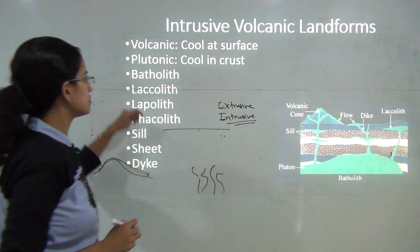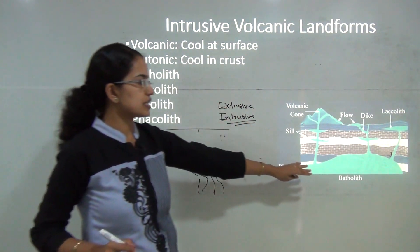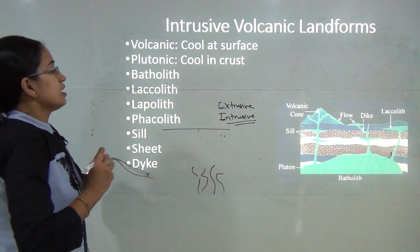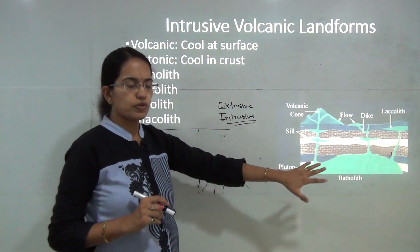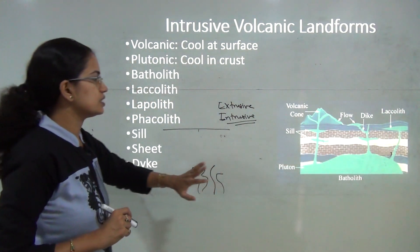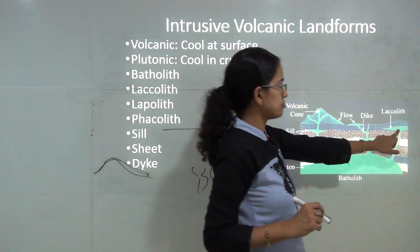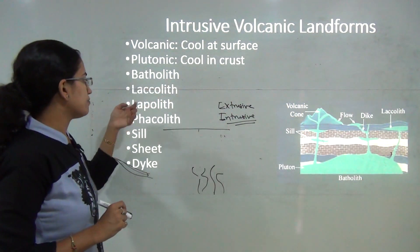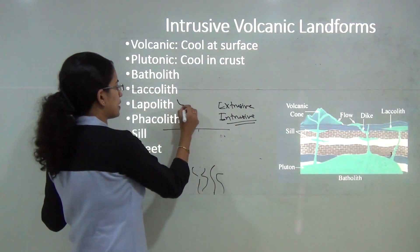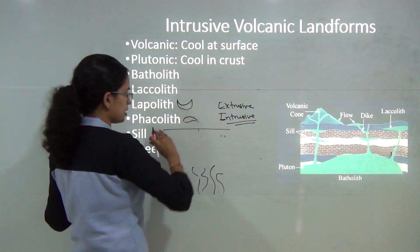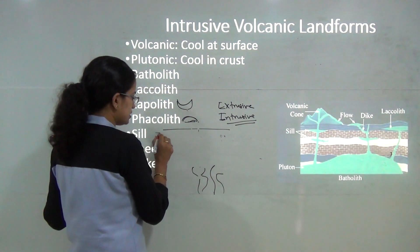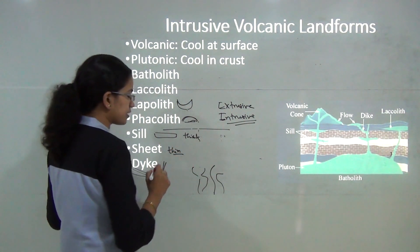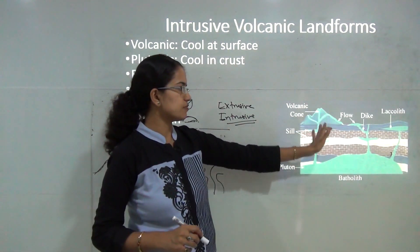Intrusive landforms can be further classified into various types. Plutonic deposits cool in the deep layers at the lowermost sections. Laccoliths are deposits found at higher ranges connected to the batholith by a pipe or conduit. Lopoliths are saucer-shaped depressions. Phacoliths are lens-shaped structures that protrude upward. Sills are thicker horizontal formations while sheets are thin. Dykes are vertical arrangements or connections made of volcanic material.